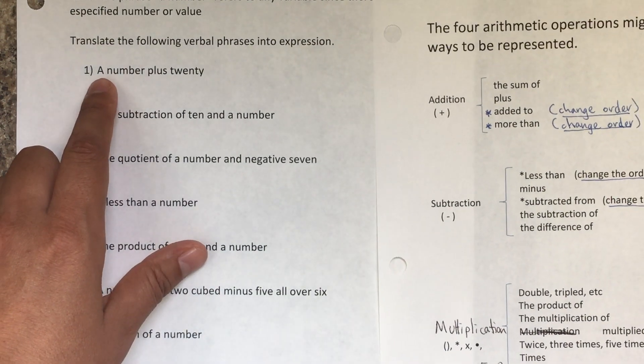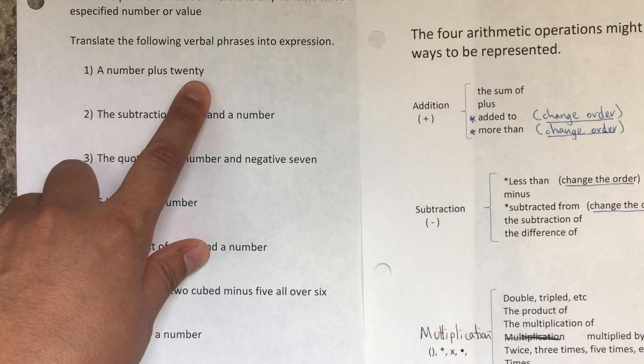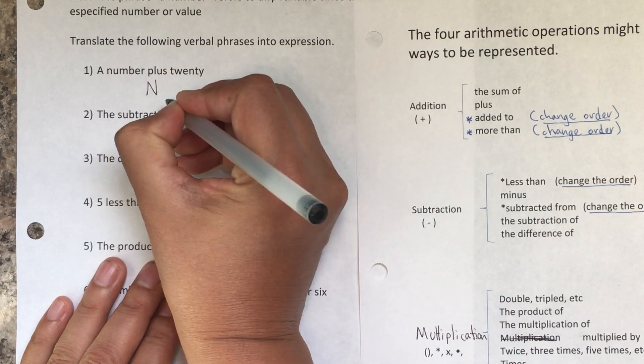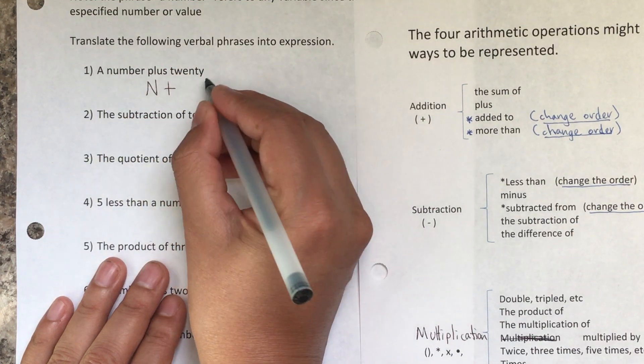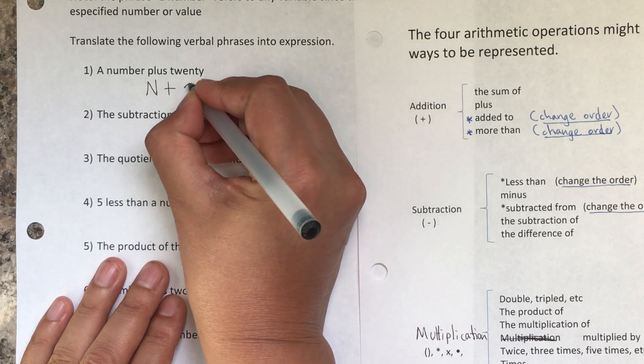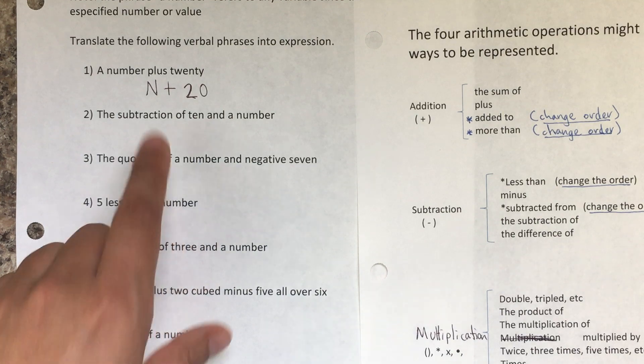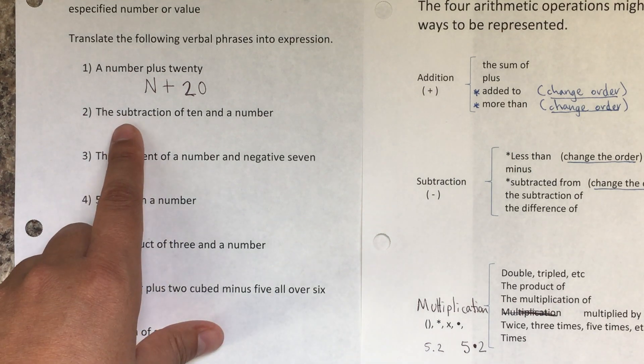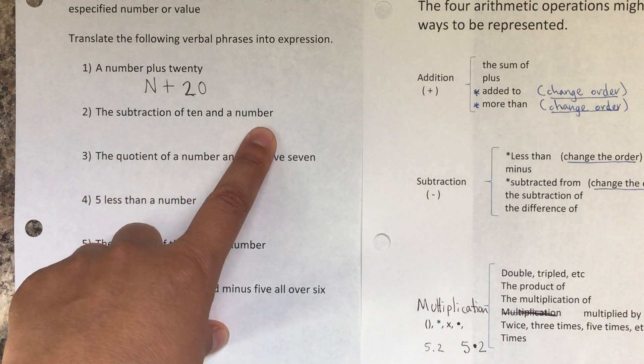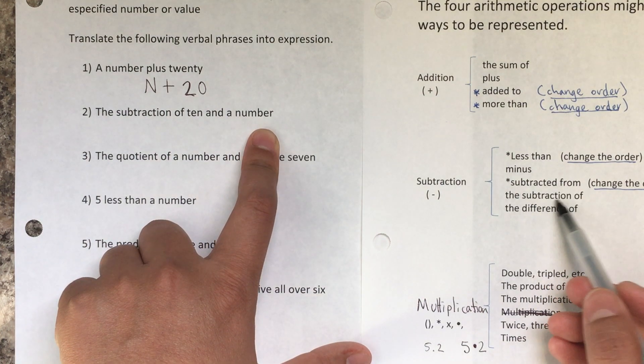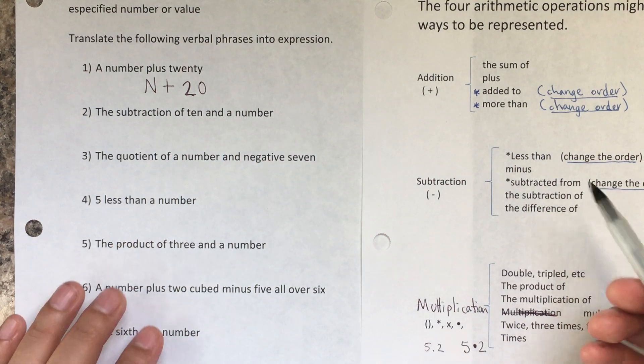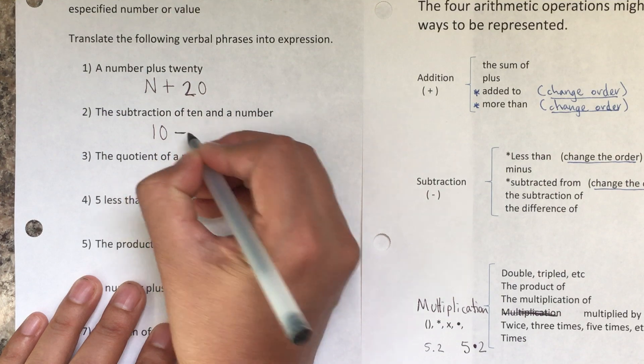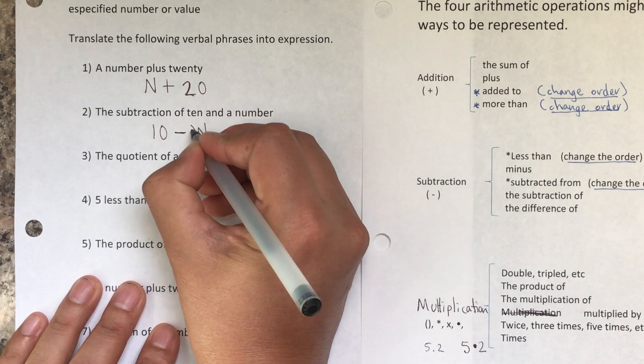The first one says a number plus 20. You can see that plus doesn't change the order, so it's just a number plus 20. The subtraction of 10 and a number—subtraction doesn't have an asterisk, so we don't change the order. The subtraction of 10 and a number, let me use w in here.